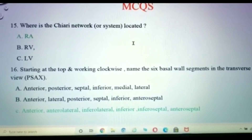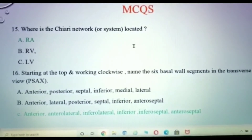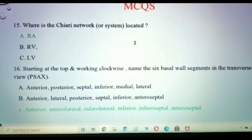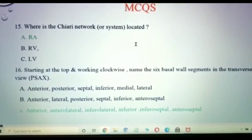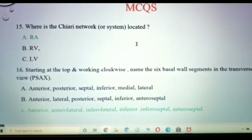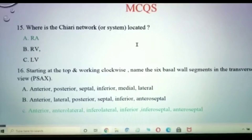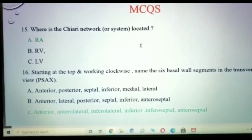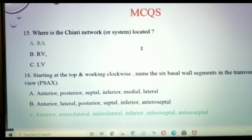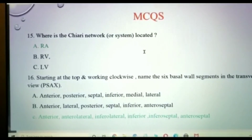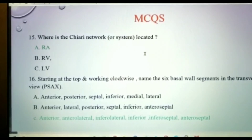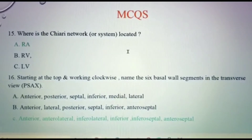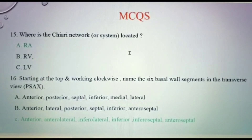Where is the Chiari network located? The Chiari network, which is the extension of the Eustachian valve, is located in the right atrium. The next very important question: starting at the top and working clockwise, name the six basal wall segments in the transverse view of the parasternal short axis. The six basal wall segments are anterior, inferior, anterolateral, inferolateral, inferoseptal, and anteroseptal.